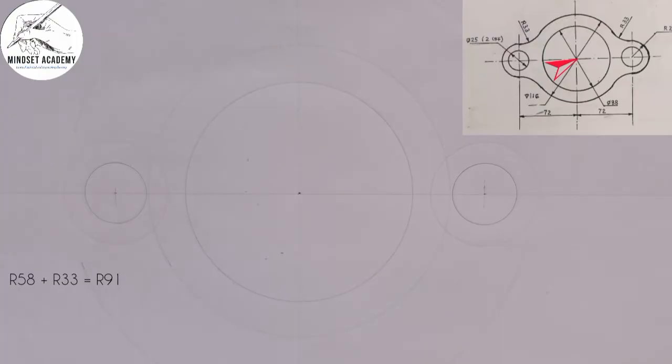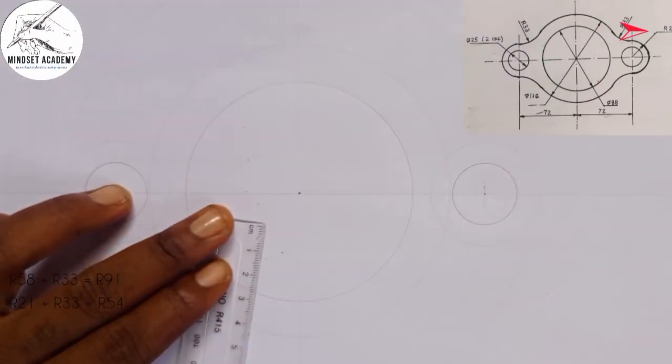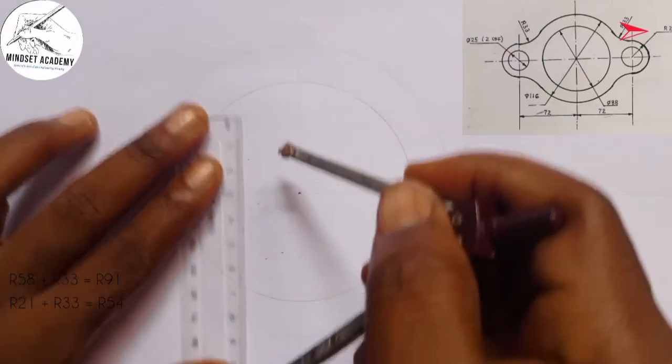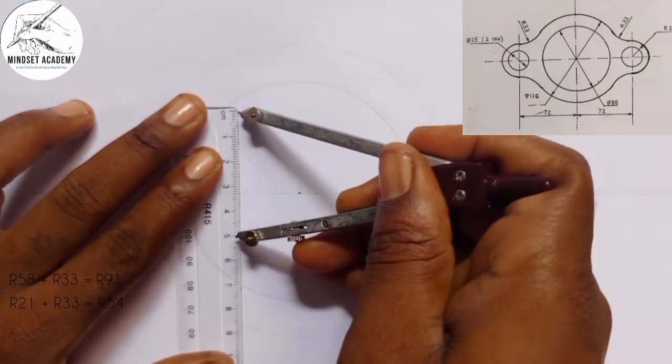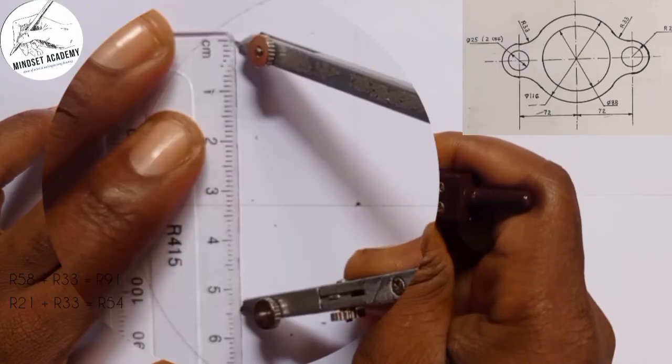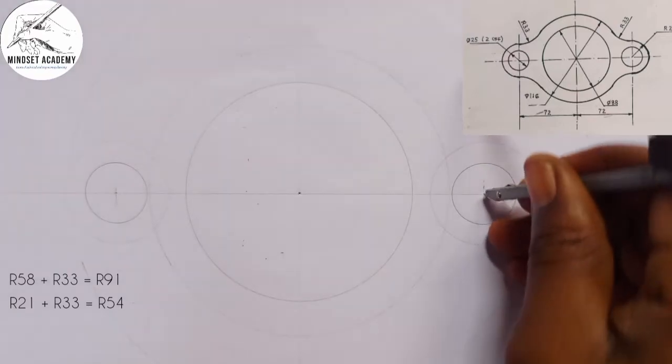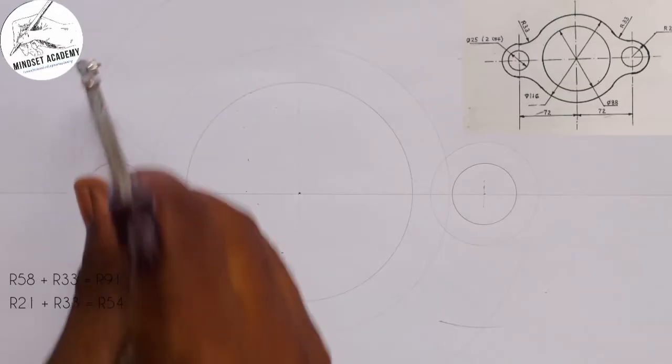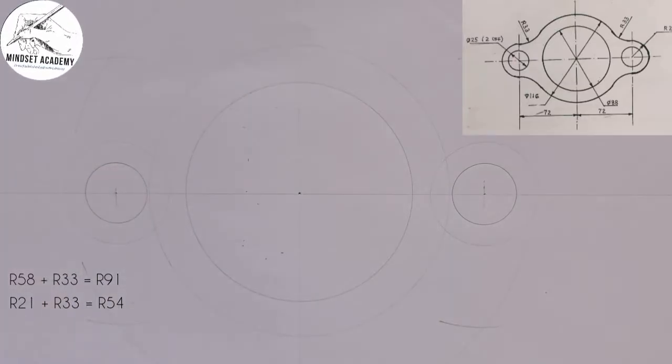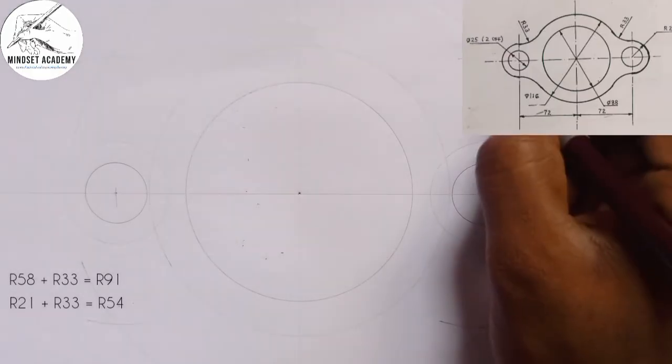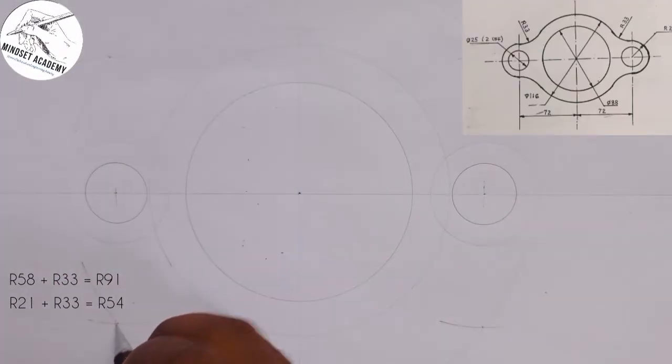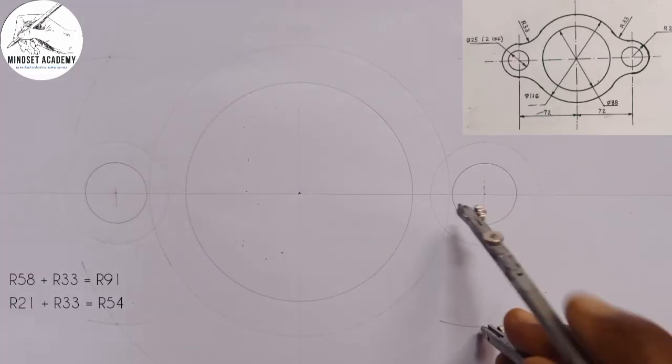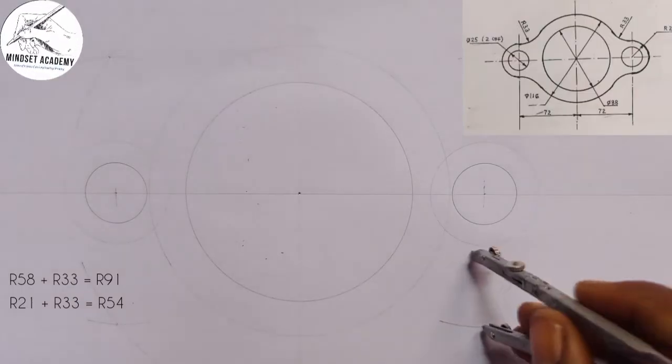Now the second stage is that the other smaller circle has the radius of 21, and I'm going to add it also to the radius of the arc which is 33, and that will give me 54. So I'm going to measure 54 on my meter rule from here to this point here. This is 54. So I'll place it at the center here. I'll strike an arc that will cut up, cut down, come here cut up and cut down.